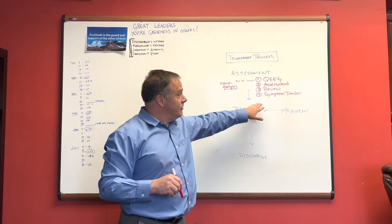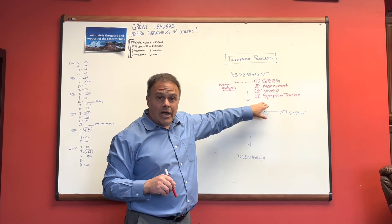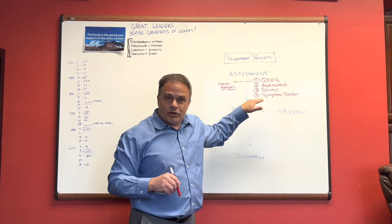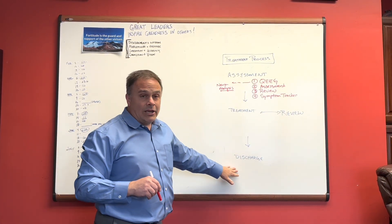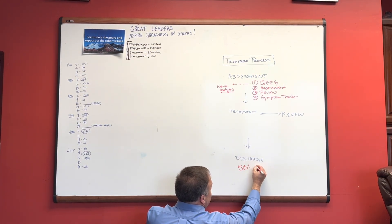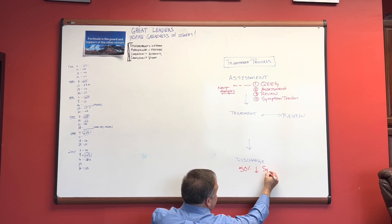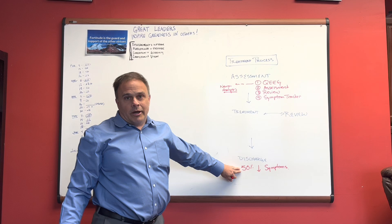Well, because the symptoms that you identified as being the problem, the ones that you've scored high, we would score them on a zero to 10 scale. Those have come down. So therefore my goal for discharge is a 50% reduction in the symptoms. So that kind of defines where we want to go.